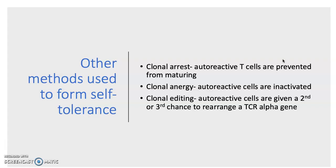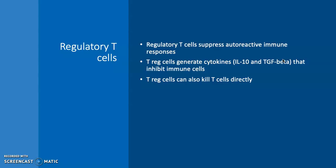Other methods used to form self-tolerance: there's clonal arrest, which is when autoreactive T-cells are prevented from maturing — they never mature. There's clonal anergy, when these cells are inactivated so they can't perform any immune functions. There's clonal editing, where cells are given multiple chances to rearrange a T-cell receptor alpha gene to make them less autoreactive. Regulatory T-cells are also very important — they suppress autoreactive immune responses by releasing cytokines such as interleukin-10 and transforming growth factor beta, and can also kill T-cells directly.